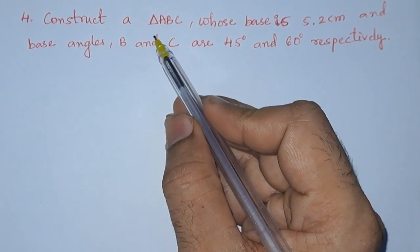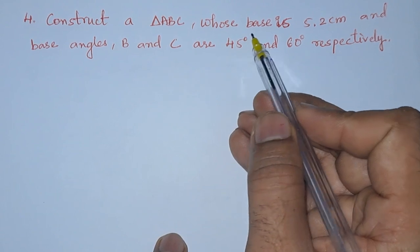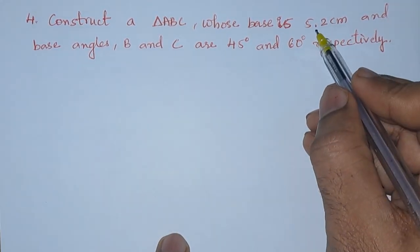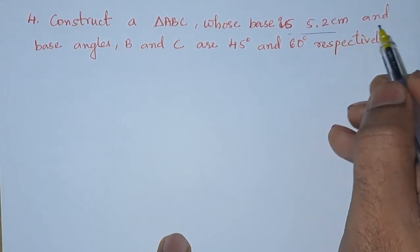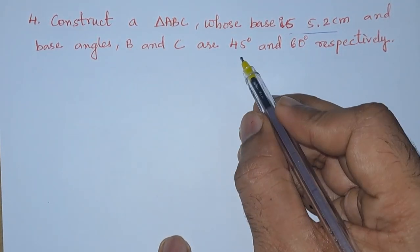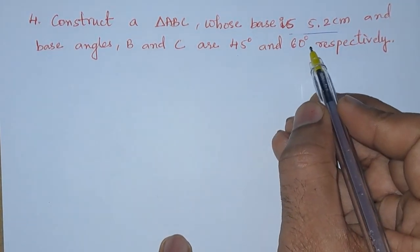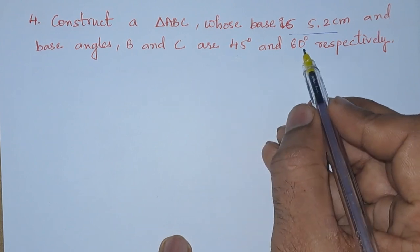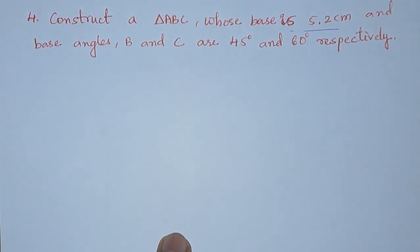Fourth problem: construct a triangle ABC whose base is 5.2 centimeters. The base angles B and C are 45 degrees and 60 degrees.